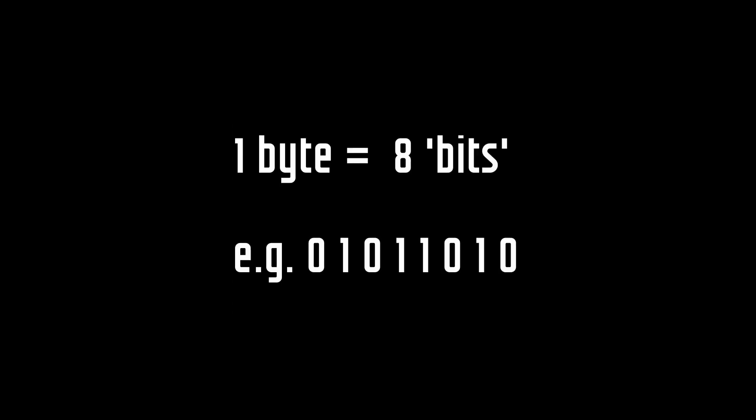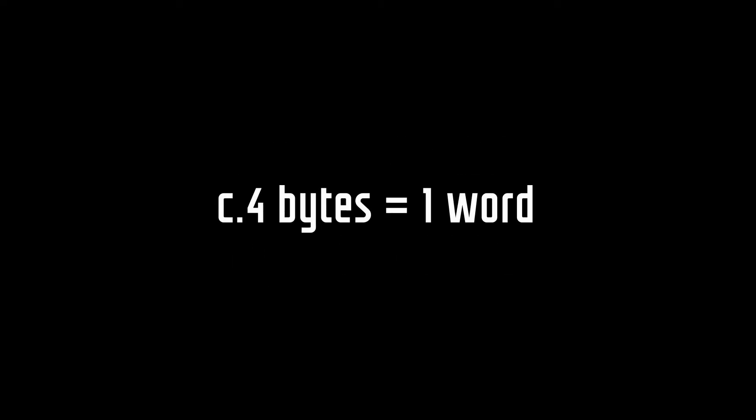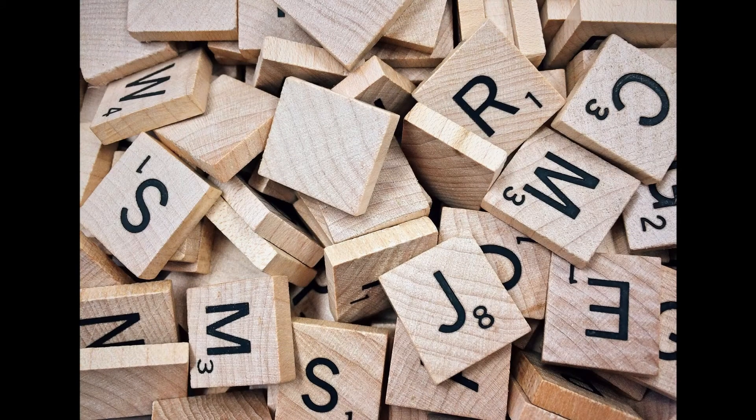A byte — a limited group of eight on and off signals, or ones and zeros, or bits — is the simplest unit of data. To give you a sense of just how much information one byte is, we are normally looking at four bytes for one word. But just one page on the World Wide Web can hold many words, and one resource such as Wikipedia, a mind-boggling number of words.